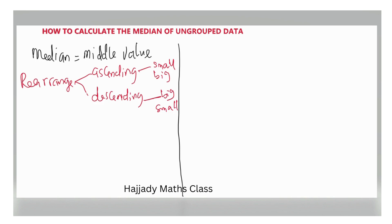Let's consider Example 1. We are given the following data set and we are expected to find the median. Don't forget the other name for median is the middle value. The data set is: 2, 3, 9, 1, 8, 6, 7. The first thing we are going to do is rearrange. Let's decide to rearrange in ascending order, meaning we pick from the smallest value to the biggest.